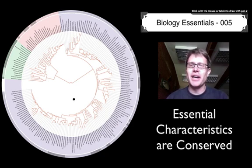Hi, it's Mr. Andersen and welcome to Biology Essentials video number 5. This is on the essential characteristics and how they're conserved.